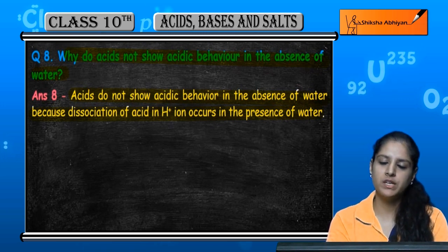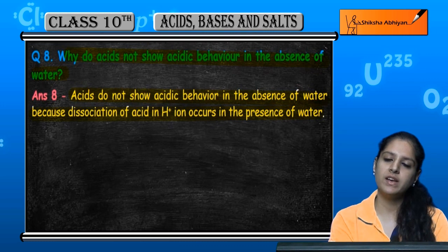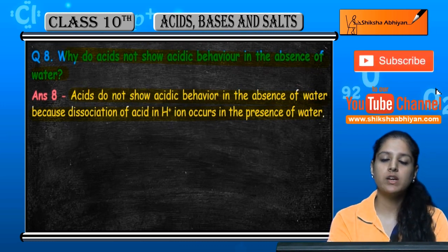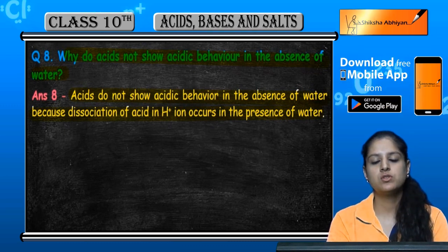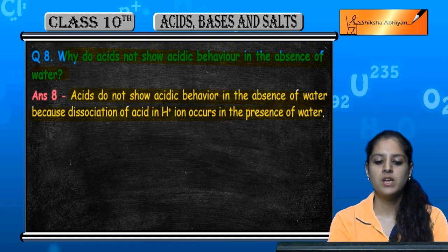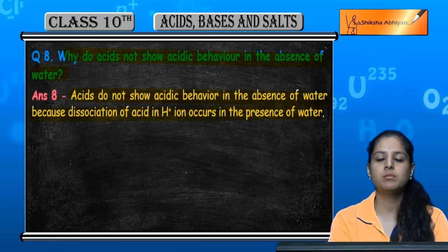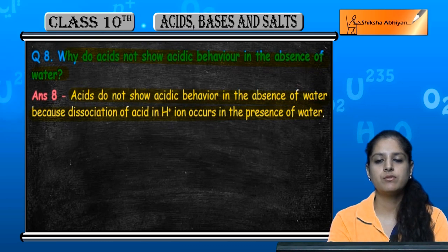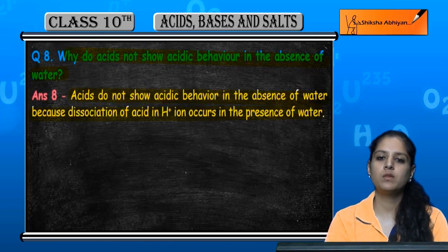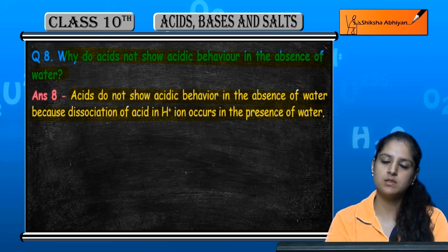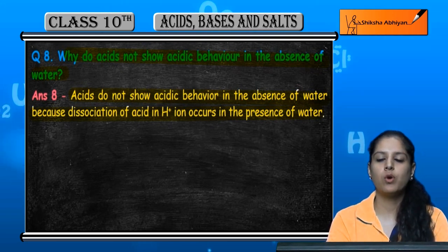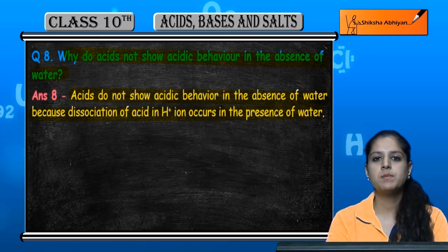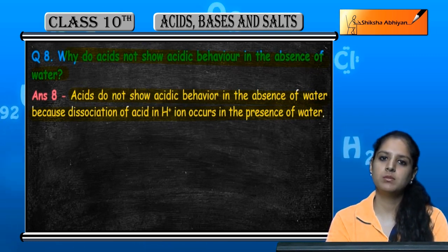When there is no water, the acid does not dissociate or ionize. When water is present, it will always dissociate. Without water, dissociation cannot occur, so acidic behavior is only shown in the presence of water. After ionization, H⁺ ions are produced, and hence the properties of the acid appear only when water is present.